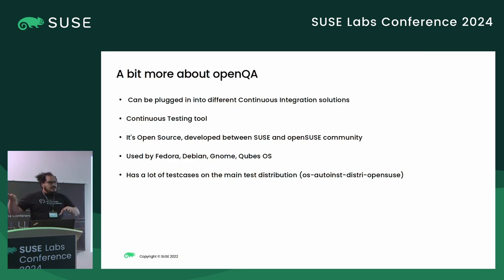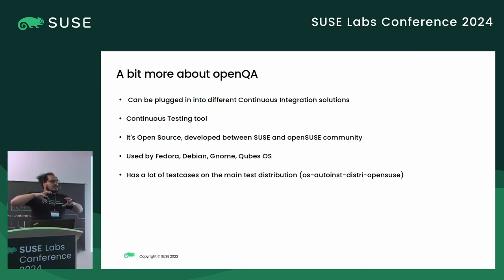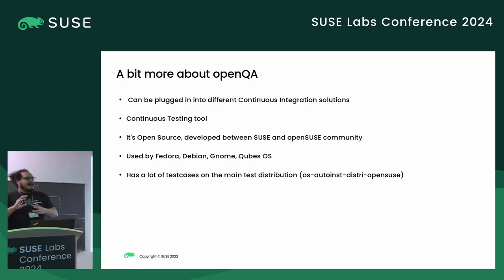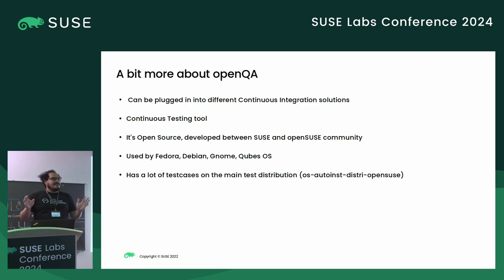We are fortunately not the only ones using it, and just recently we managed to start pushing for a QA call across different communities. People from Fedora, people from Canonical, and GNOME sitting together saying, hey, we are doing the same thing, we are testing the same things, why don't we collaborate? And this is slowly moving. Right now, one monthly call — that's good enough. I call it success.